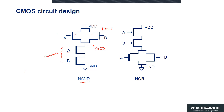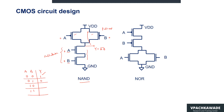For instance, let's say we apply a combination of A equals 0 and B equals 0. The NMOS switches are switched off, but the PMOS switches with A equal to 0 and B equal to 0 will be switched on, and the output will be pulled up to VDD, giving Y equals 1. Similarly, you can verify the operation for all possible input combinations.